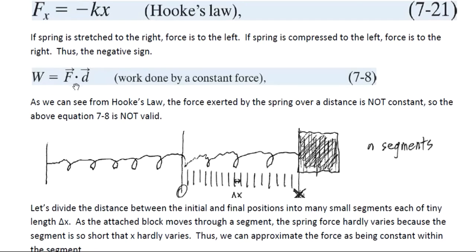But there was a stipulation: that formula for work only applies if the force is constant. From Hooke's Law, we can see that the more we stretch the spring, the greater the force becomes. The force is changing — it is not constant. So how do we calculate the work done by the spring force when it is not constant?